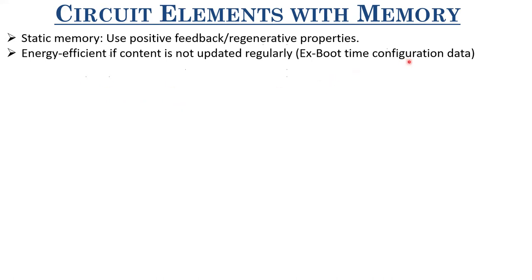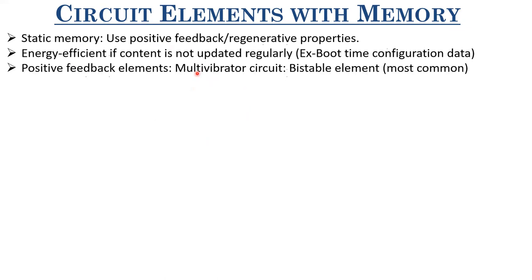For instance, consider boot-time configuration data. Whenever you turn on your computer, it loads this boot-time data, and this boot-time data doesn't change much unless you are going into the boot settings. This is the kind of data where static memories would be efficient. How can you realize static memory? Using positive feedback. The positive feedback elements available in circuits include multivibrator circuits, which come in different flavors. The most common of them is a bistable element.